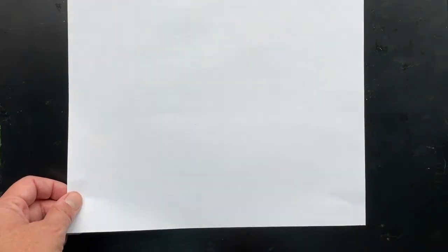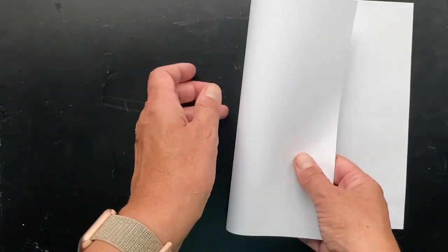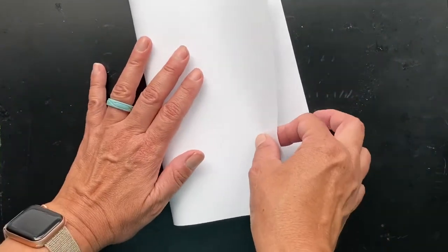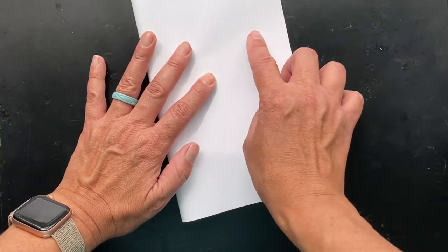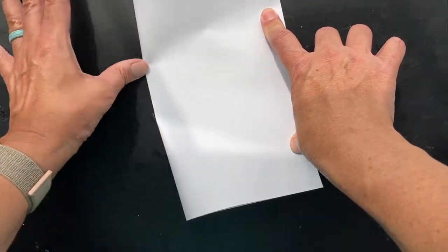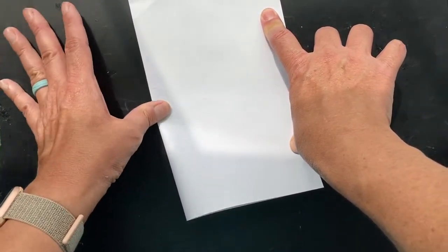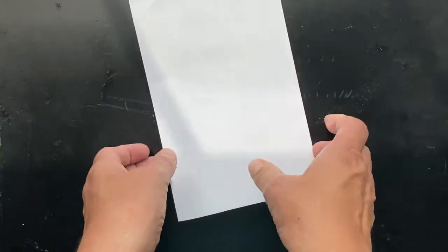The first step for this project is to fold our paper into quarters. What we will do is take our paper like this first and fold it in half, almost like you're closing a book. So go ahead and line up those edges and then put a crease.